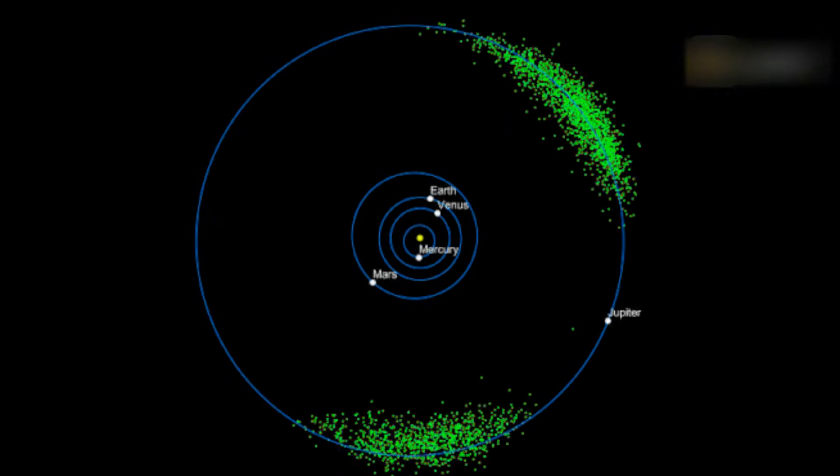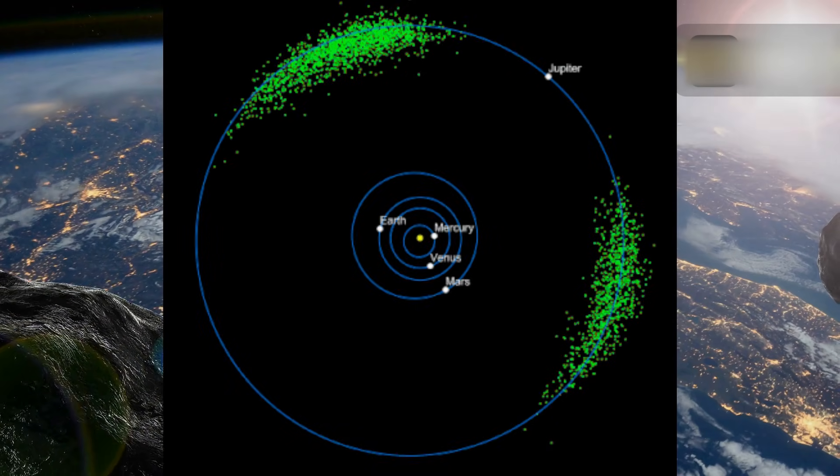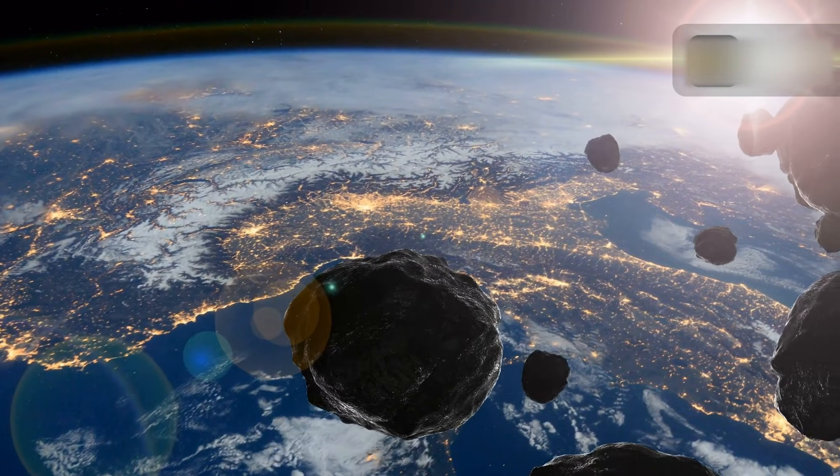Most asteroids orbit the Sun between Mars and Jupiter in the main asteroid belt. Asteroids are celestial bodies that orbit very close to Earth and pose a potential threat to life on Earth.